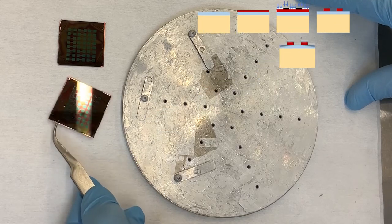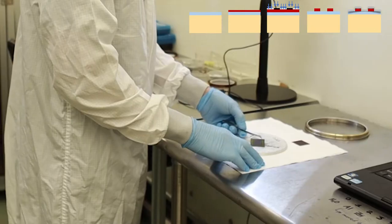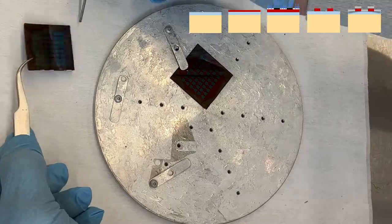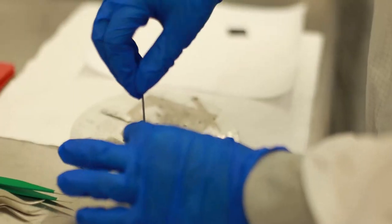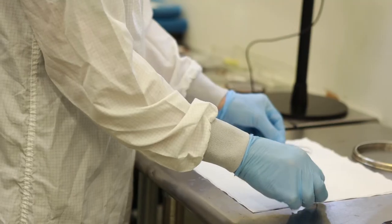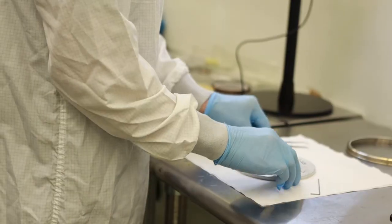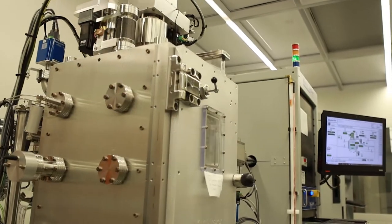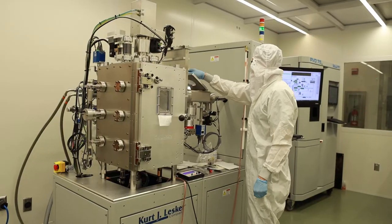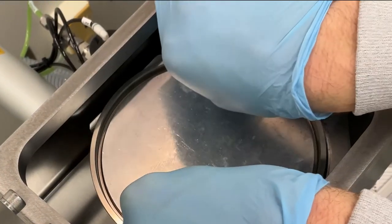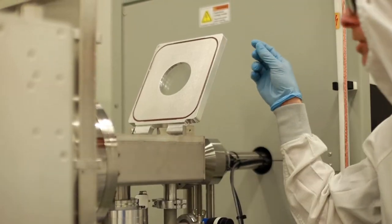This is the sample holder for the e-beam evaporation system. Takes a little finger dexterity. I obviously don't want to cover up the important features. And let's make sure it's not going to fall off. Looks good to me. All right. So let me open this for you. So it's really particular about its placement. When it goes in there, it has to be in just the right spot. That looks good.